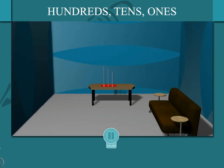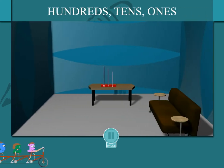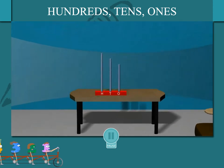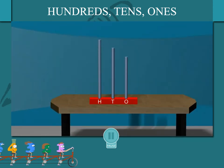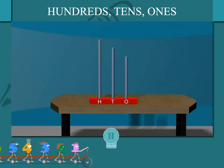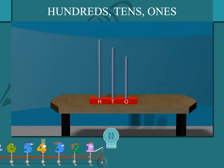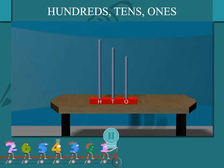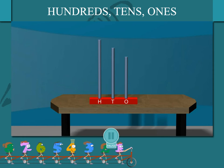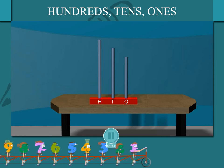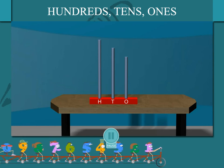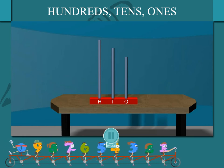Hundred, tens, ones. Watch this abacus on the table. It has three areas of ones, tens and hundreds. Beads fill in the abacus.